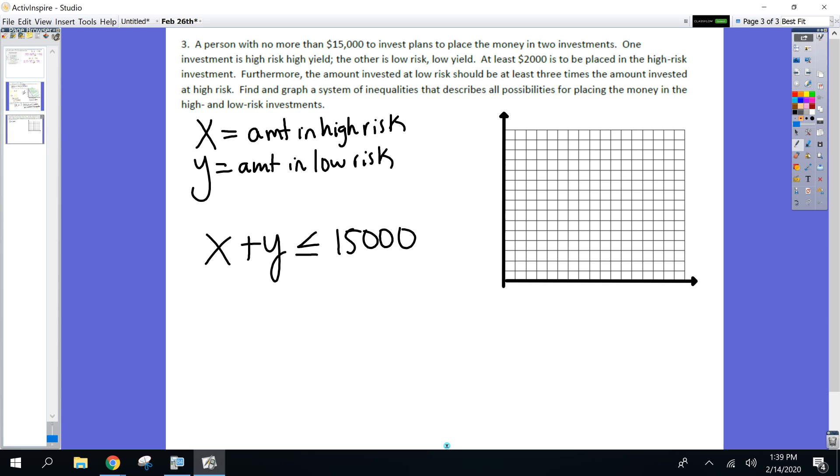Who's finding the second equation now? At least 2,000 is placed in the high risk. What's high risk? Get the variable first. X and 2,000 at least. Think about it. You have at least $10 in your pocket. 10 or more, right? 10 or greater. And the final one. The amount invested at low risk. What's low risk? Y. Should be at least three times the high risk. Greater than or equal to three times X.